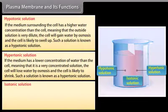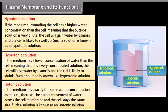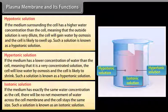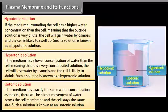Isotonic solution: If the medium has exactly the same water concentration as the cell, there will be no net movement of water across the cell membrane and the cell stays the same size. Such a solution is known as an isotonic solution.